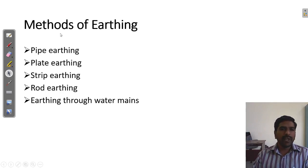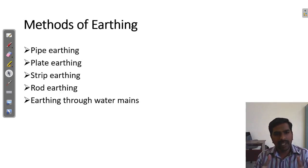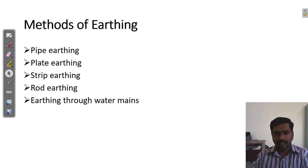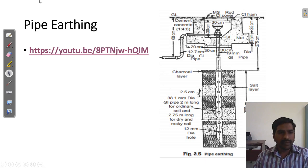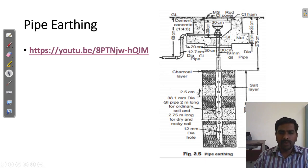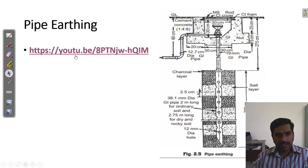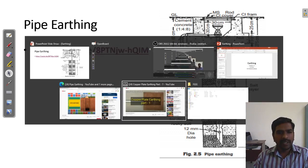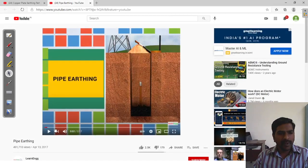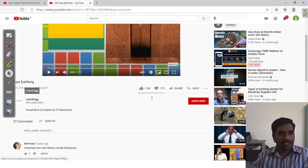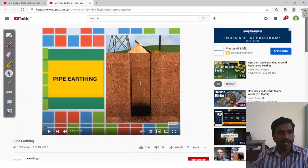There are different methods of earthing: pipe earthing, plate earthing, strip earthing, rod earthing, and earthing through water mains. These are the different methods of earthing adopted in homes, industry, and appliances used in regular life. What is meant by pipe earthing? This is a video developed by a learn engineer — it is a visual content about pipe earthing available on YouTube, being used here for education purpose. This video describes the procedure for installing pipe earthing.